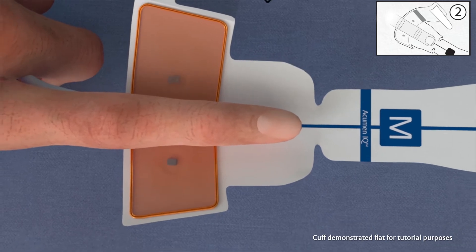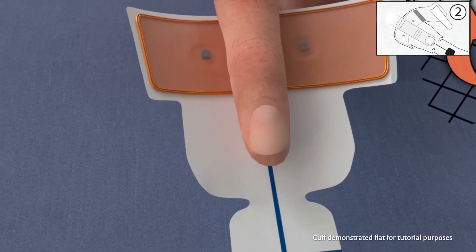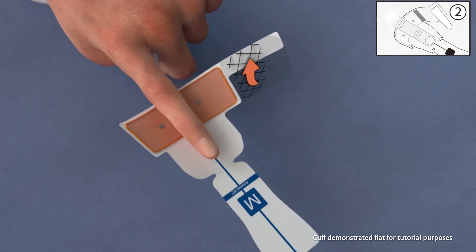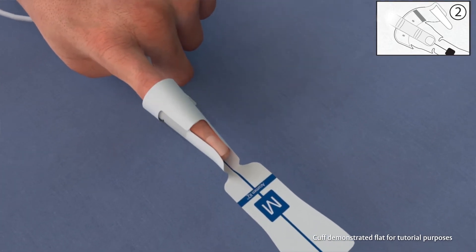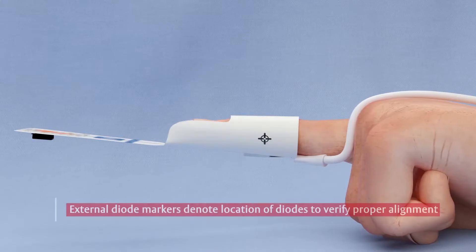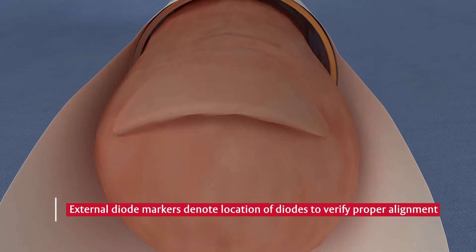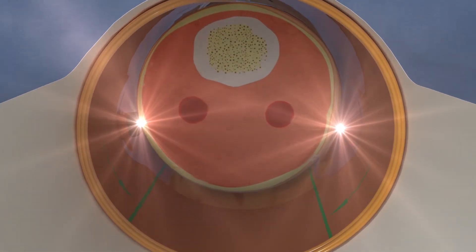Align the distal end of the finger with the center line of the alignment tab on the AcumenIQ Finger Cuff. Allow the AcumenIQ Finger Cuff to close around the finger. External diode markers on either side denote location of diodes to easily verify proper alignment.